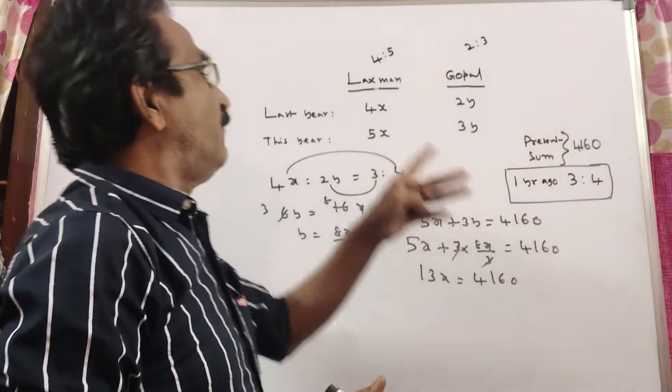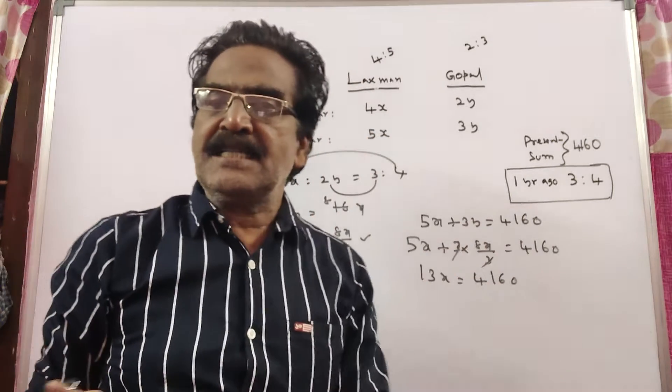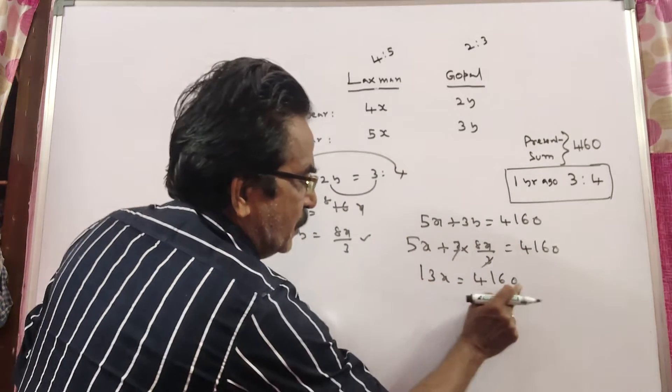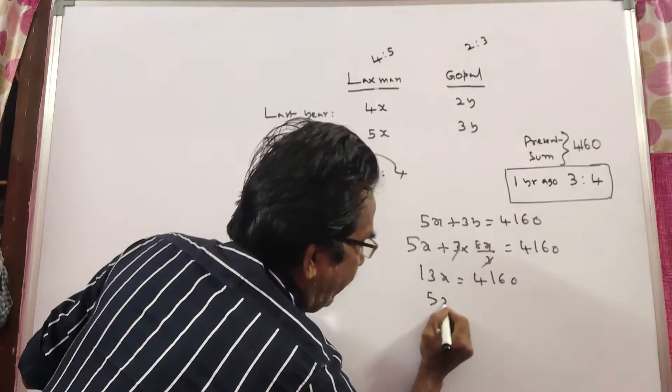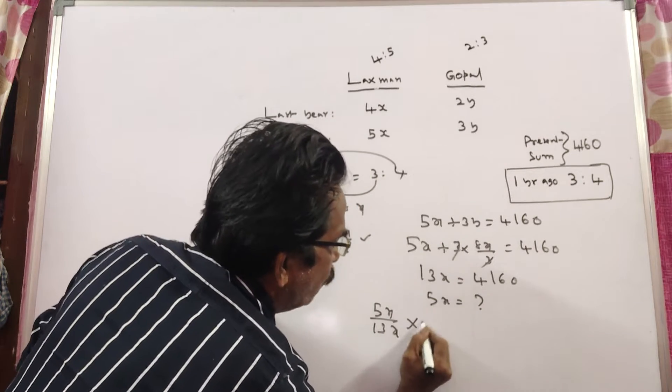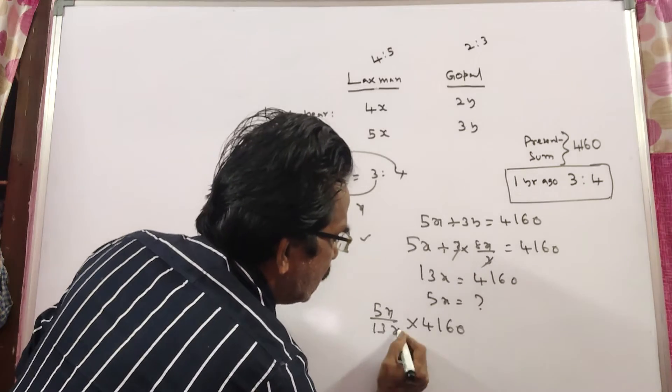Friends, we want the present salary of Lakshman. The present salary of Lakshman is 5x. So, 13x is equal to this much. What is 5x? 5x by 13x into 4,160. So, x gets cancelled.